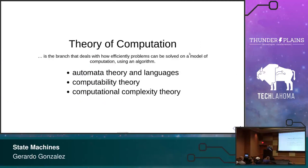State machines come from a part of computer science known as theory of computation. Theory of computation really cares about problems and how efficiently we can solve them with specific algorithms in different computational models. Under theory of computation there are three subfields: automata theory and languages, computability theory, and computational complexity theory.